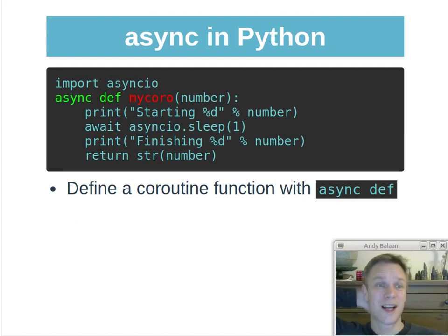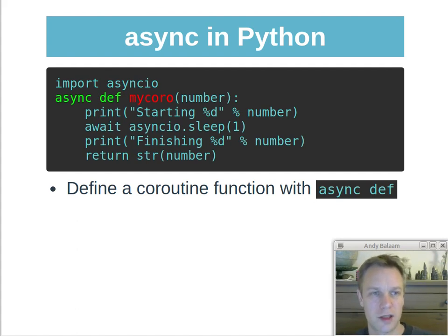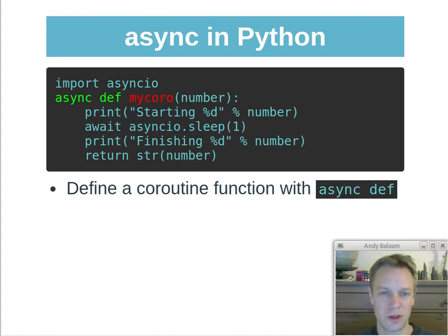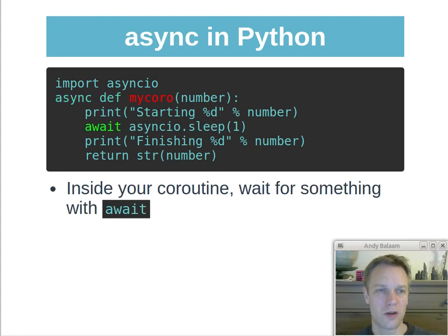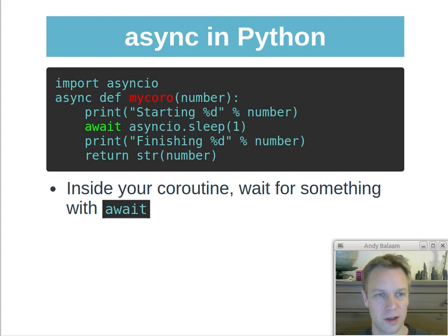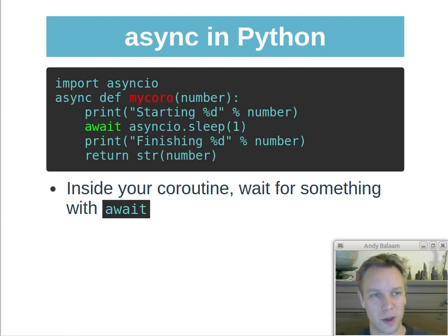So how do we write an async function? You write something called a coroutine function. It looks like a function — it has the def keyword — but before that it has the keyword async, and that means this is not a function at all, it's what's called a coroutine function, which essentially is a function that needs to be run by the event loop instead of just being executed normally. Inside any coroutine function you're almost definitely going to have the keyword await, because otherwise why are you writing a coroutine function? The two keywords async and await mark this out as a coroutine function, not just a function.